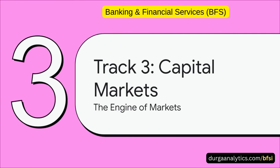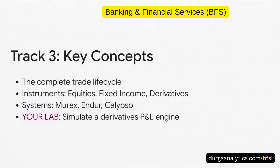From the flow of money, we shift gears and move to the engine that drives global markets at lightning speed. Track Three completely immerses you in the trade lifecycle, from the instant an order is placed to its final settlement. You'll get fluent in equities, fixed income, and complex derivatives. We'll give you conceptual exposure to powerhouse systems like Murex, Endur, and Calypso. In your lab, you're going to simulate a derivative's profit and loss and margin engine, giving you a real feel for risk and reward. This is the kind of hands-on experience that gets you noticed.